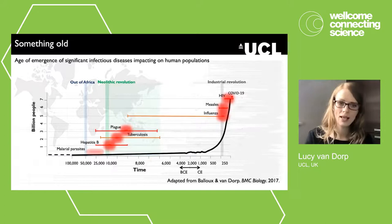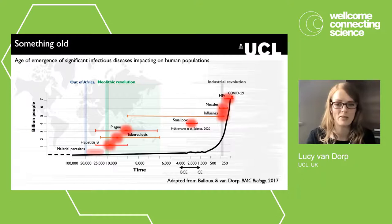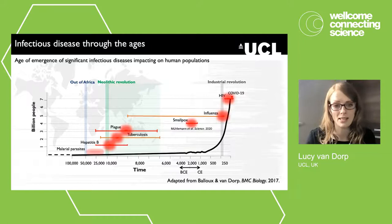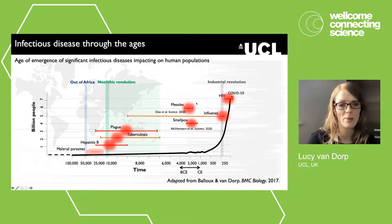Some recent good examples: the variola virus responsible for smallpox was thought to have emerged in humans in the 16th to 17th century, but a recent paper identified this virus in 13 ancient human remains, pushing back the age of emergence by around a thousand years. Another striking example is measles, thought to have jumped into humans around the 9th century, but a genome from a lung pathology sample dating to 1912 pushed the divergence of measles from rinderpest potentially as far back as 6 BCE.